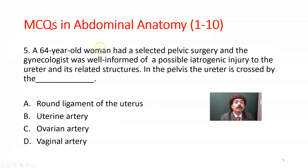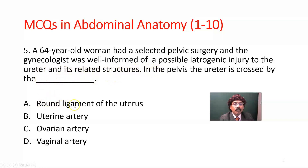Question number five: A 64-year-old woman had elective pelvic surgery, and the gynecologist was well informed of a possible iatrogenic injury to the ureter and its related structures in the pelvis. The ureter is crossed by which structure? Options: round ligament of the uterus, uterine artery, ovarian artery, or vaginal artery. The answer is B — the uterine artery. Gynecologists must always be alert that this artery is related to the ureter.